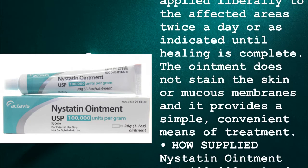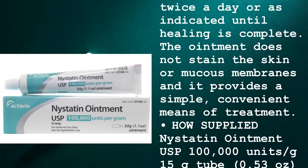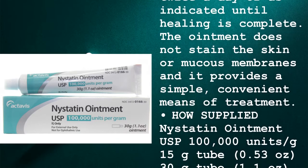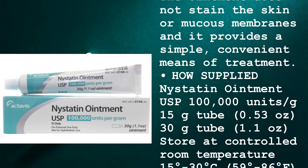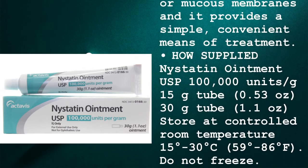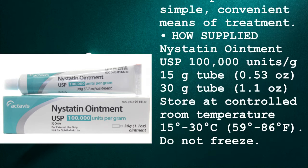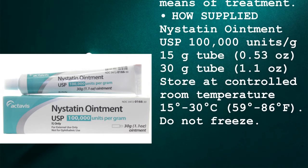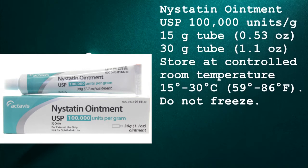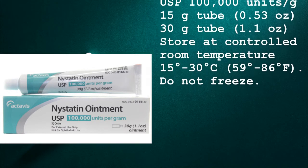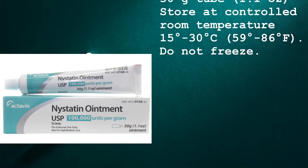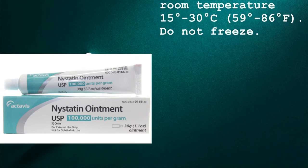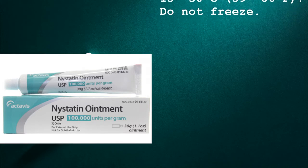How supplied. Nystatin ointment USP 100,000 units per gram: 15 gram tube (0.53 ounces) and 30 gram tube (1.1 ounces). Store at controlled room temperature, 15 to 30 degrees Celsius (59 to 86 degrees Fahrenheit). Do not freeze.